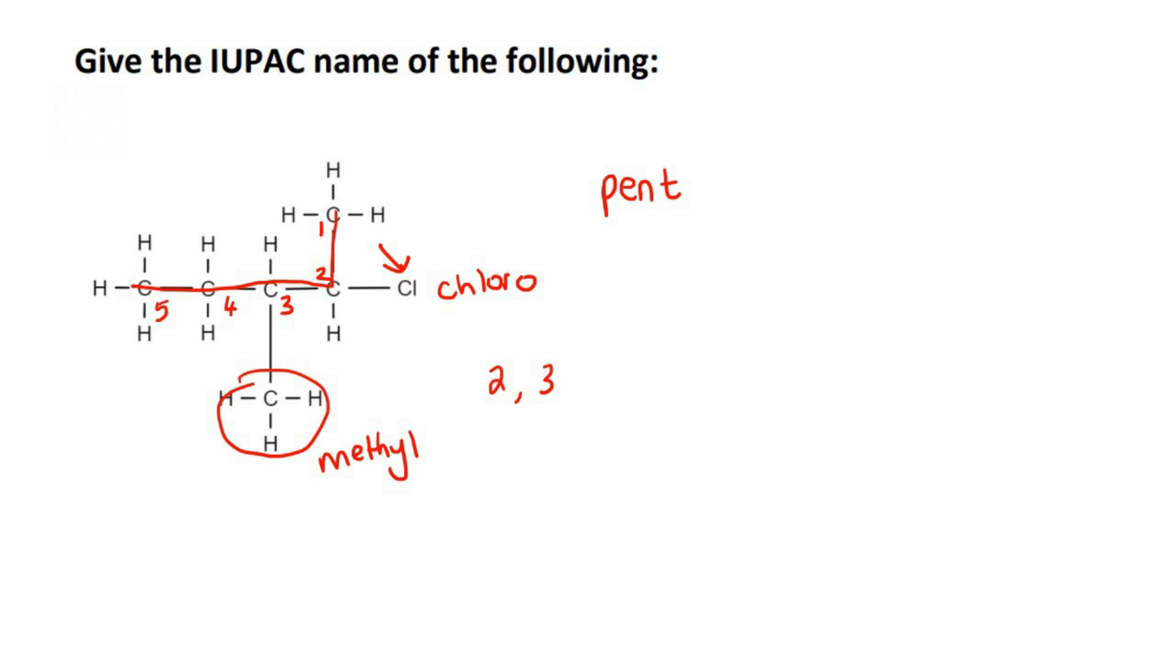If you start labeling from the other side, it would be one, two, three, four, five. Then your branches would be on carbon number three and four. You would not do it that way because you want the numbers to be as low as possible.